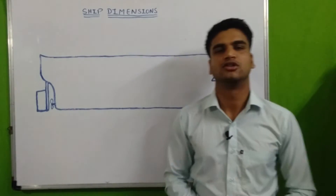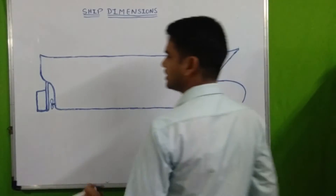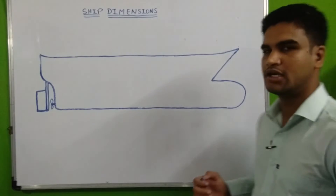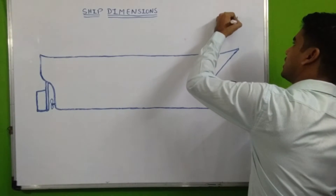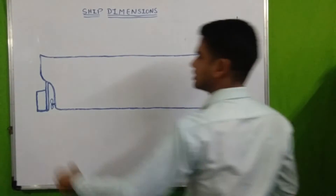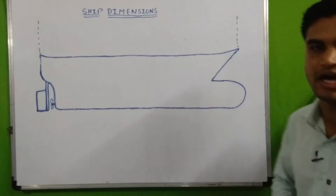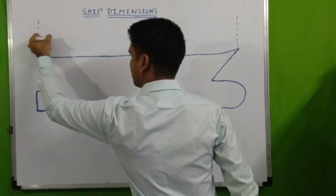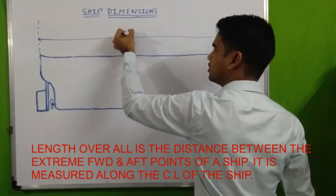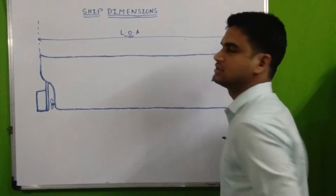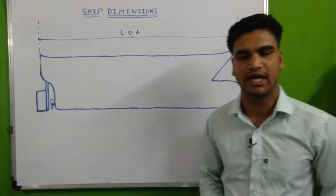Today our topic is ship construction and we will start with ship dimensions. First is length overall. Length overall means the distance between the extreme forward and aft points of a ship. The distance between them is known as length overall. It is measured along the center line of a ship and it is used for berthing and maneuvering of a ship.